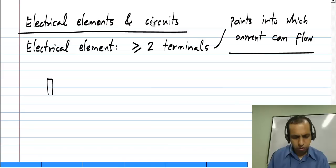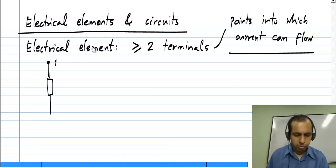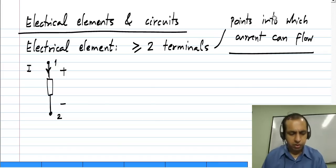A generic element is represented by a box with two wires sticking out like this. This is terminal one and terminal two, and a current can flow into this terminal. We measure voltages across any pairs of terminals. In this case, we have only one pair of terminals, and we have just a single voltage that can be measured.